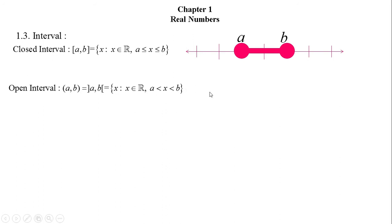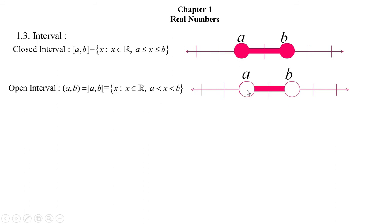And this can be presented by the number line. Here you will find that the points A and B are empty — not filled — because we exclude A and B. That means, without A and B, all the real numbers between these two numbers is called the open interval of A and B.